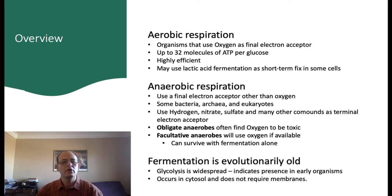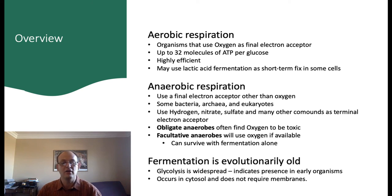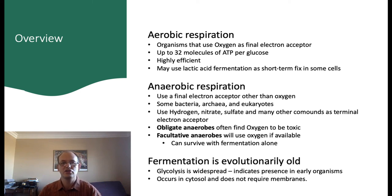Facultative anaerobes are organisms that can survive using fermentation, but in the presence of oxygen will use it. Yeast used in bread making is a good example — it will happily use oxygen and gain the efficiency of oxidative phosphorylation when oxygen is available, but will survive happily without it, such as when it finds itself in a ball of bread dough. One thing that all these organisms have in common is that they all use glycolysis as the first step in breaking down glucose, suggesting that glycolysis is evolutionarily very old. Furthermore, it doesn't require the use of any membranes like mitochondria, and so could have, and certainly did, evolve before eukaryotes.